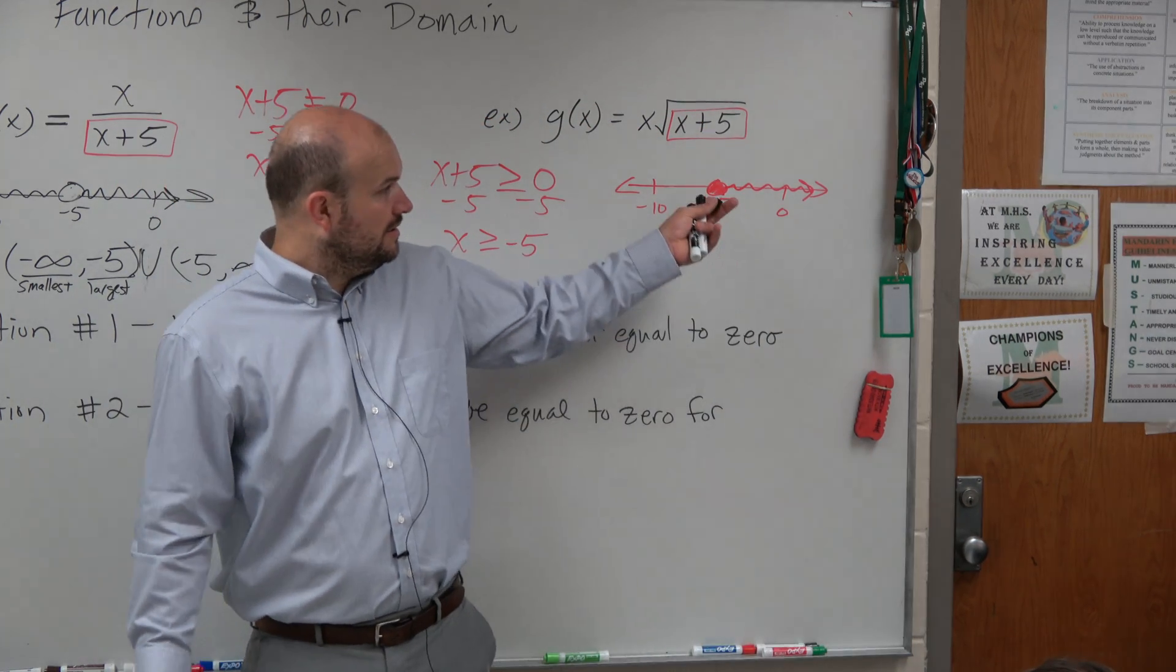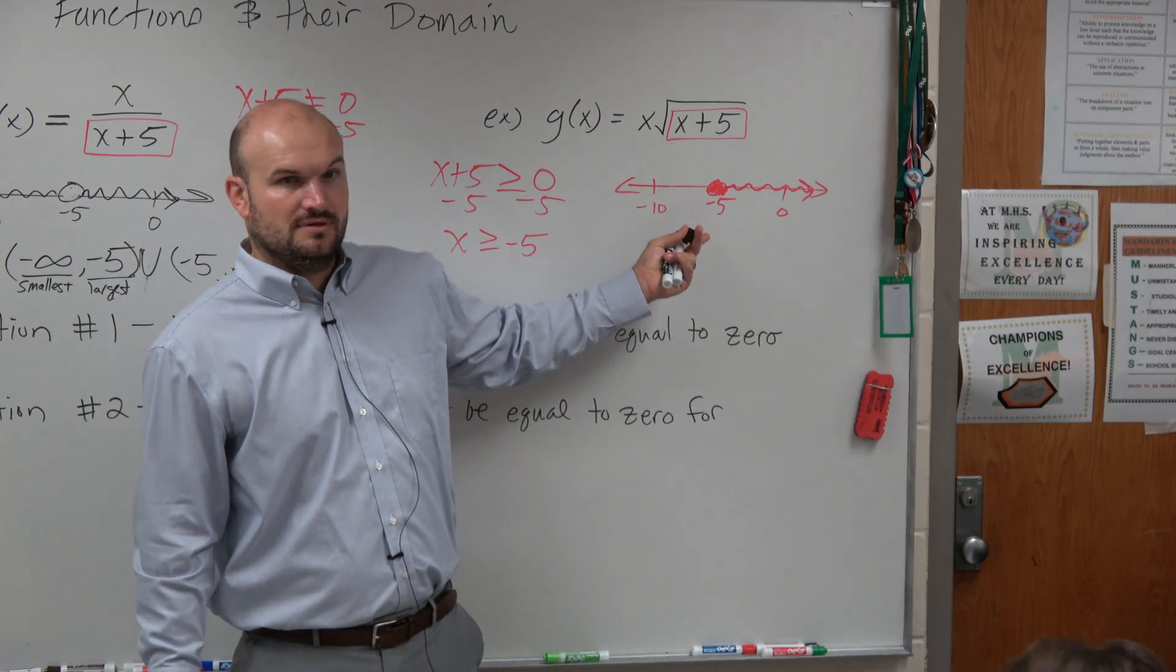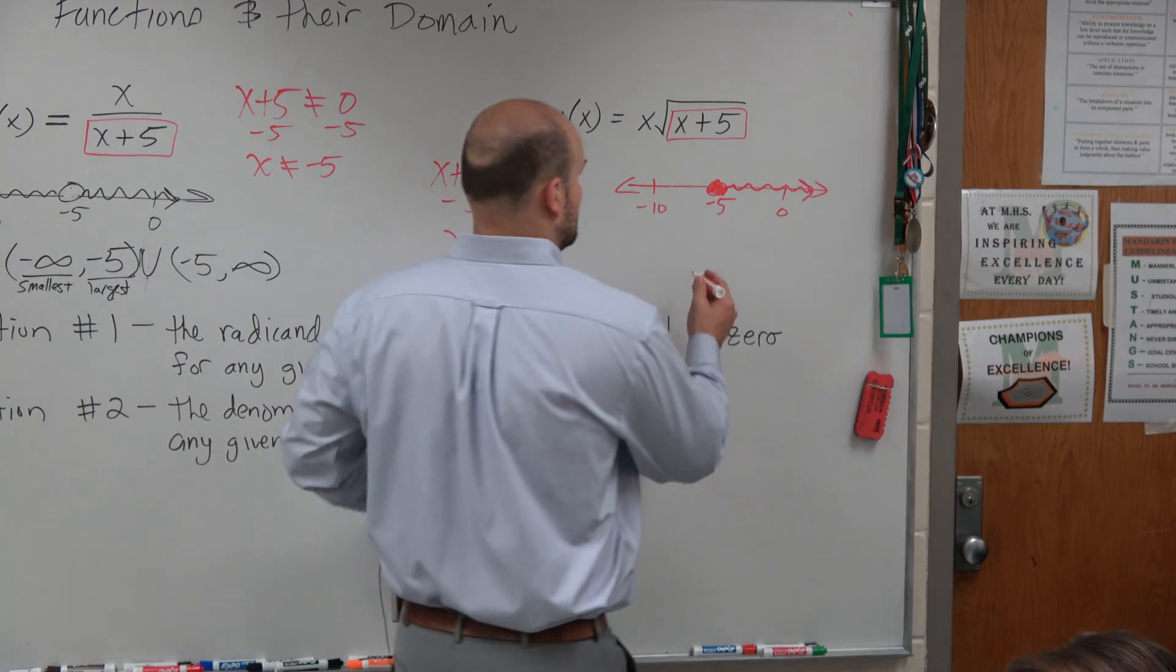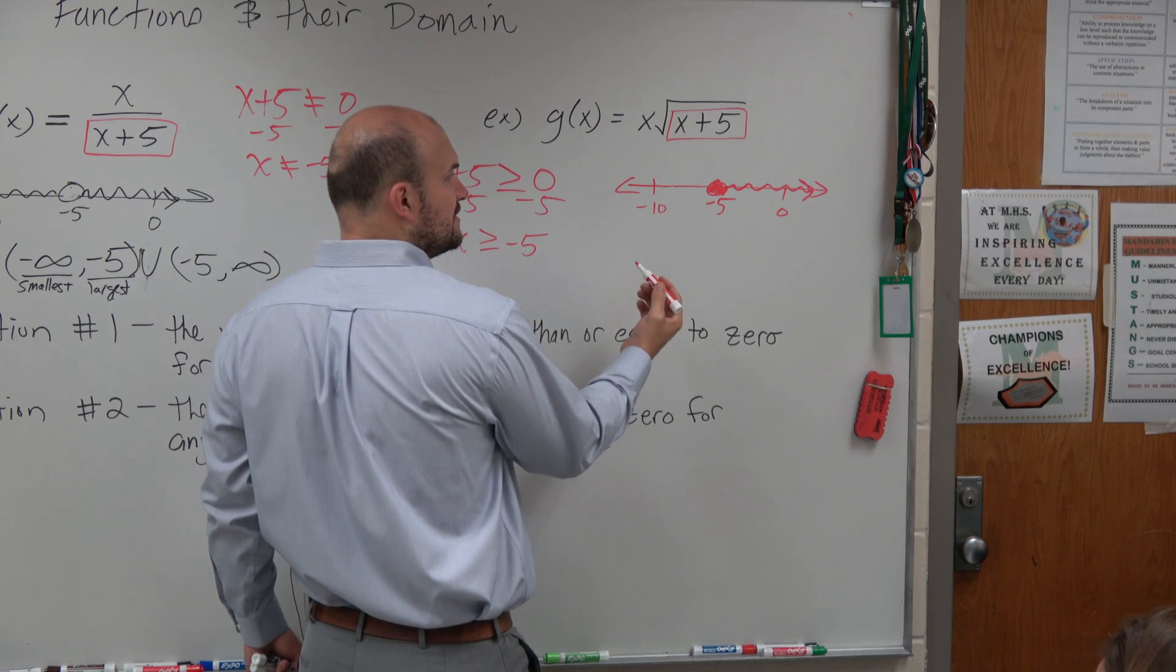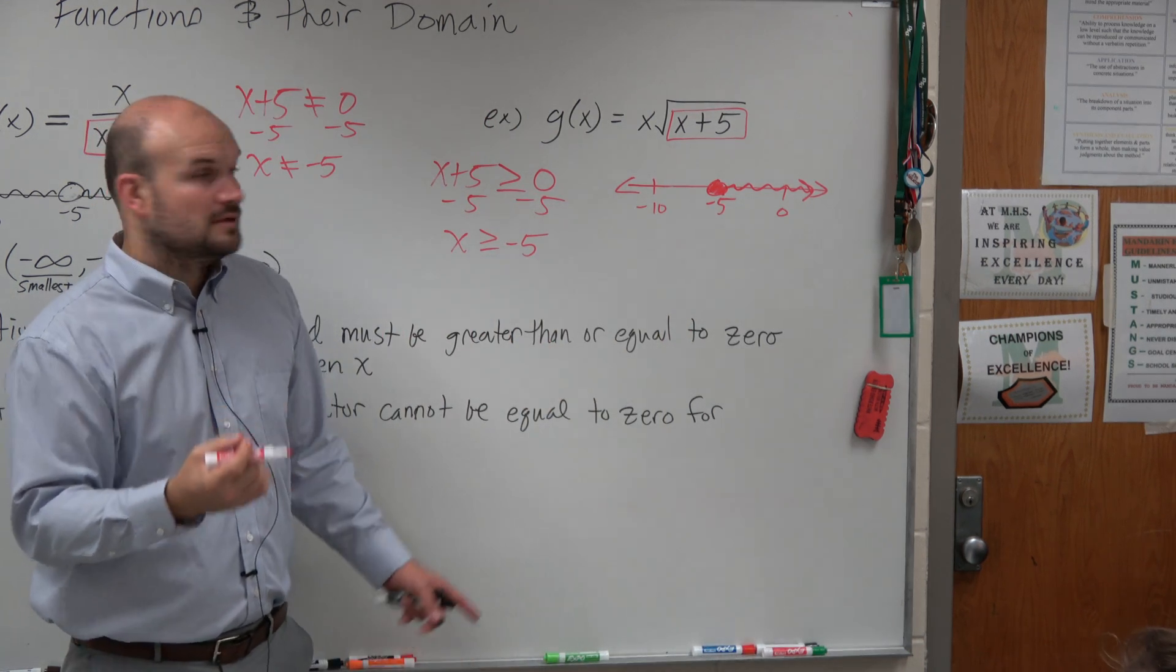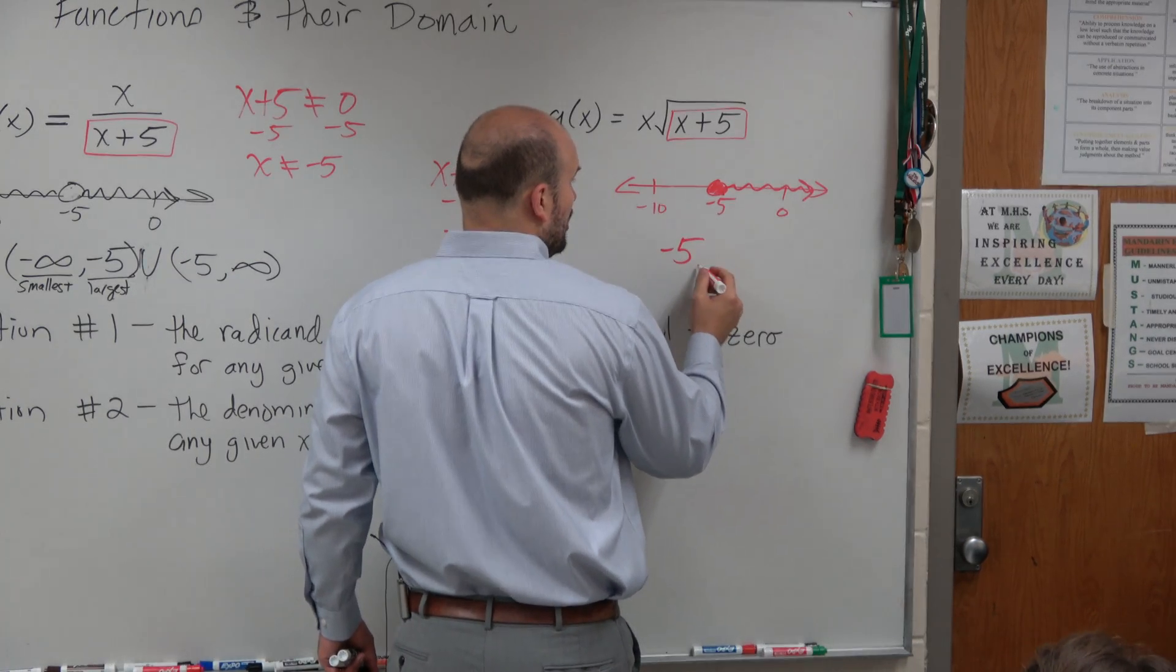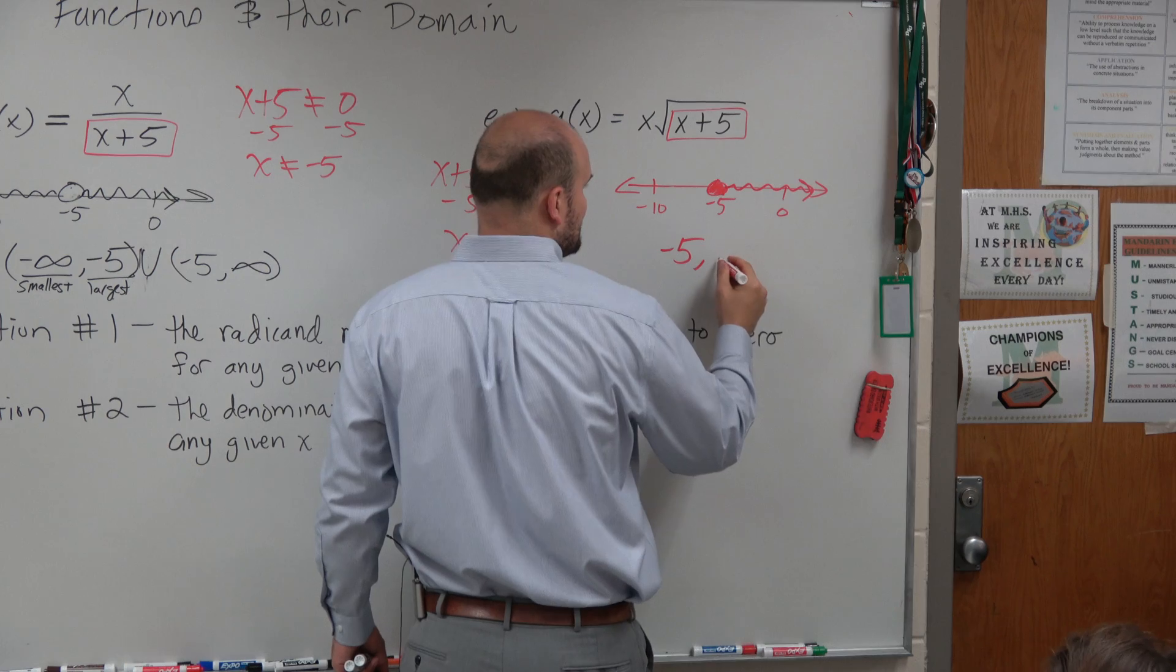So now, by looking at this, if we need to represent, what's the smallest value on this graph? What's the smallest value that's defined on the graph? Negative 5. And then we're going all the way to infinity, we're never going to stop.